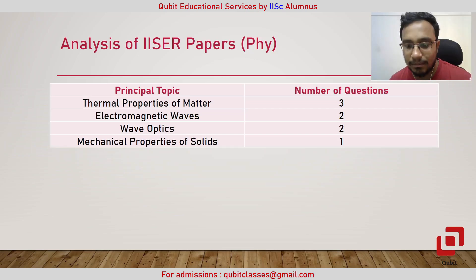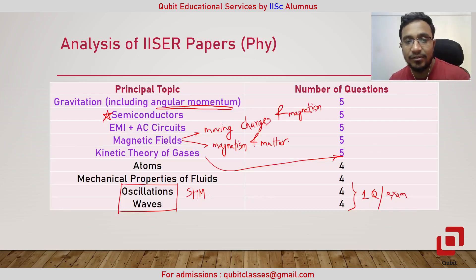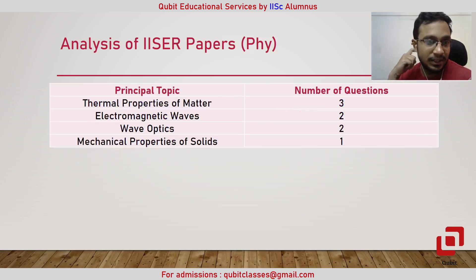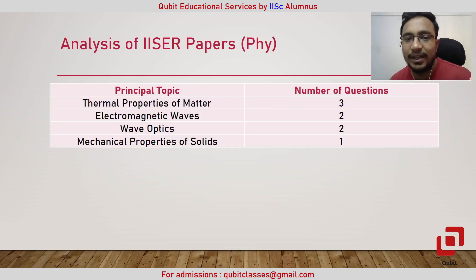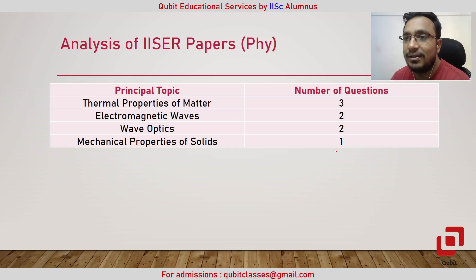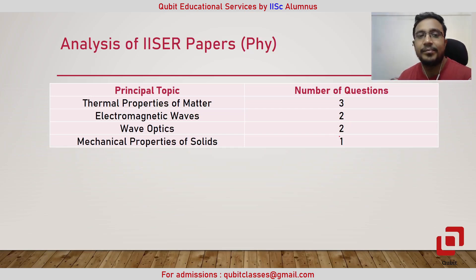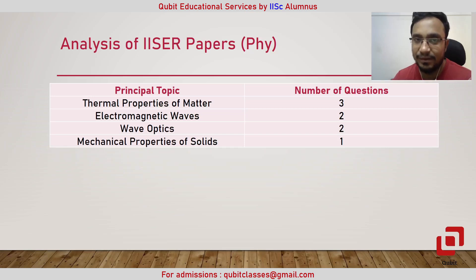In modern physics you can expect one or two questions covering atoms, nuclei, dual nature, and semiconductors. The least-asked topic is mechanical properties of solids, which covers Hooke's law, the stress-strain curve, and relations between moduli of elasticity. Wave optics has no diffraction questions seen in these papers. Electromagnetic waves are also rare questions.